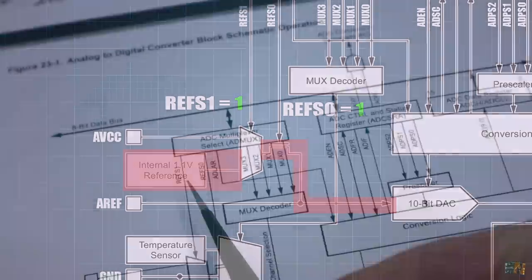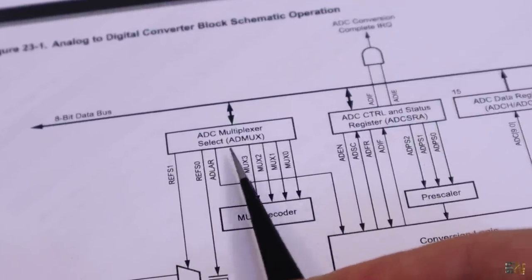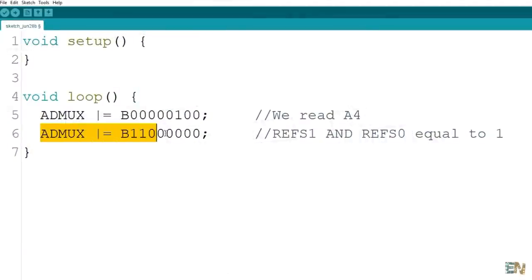These two bits are from the ADMAX register, bits 6 and 7. So in order to select the internal reference in the code, we make the ADMAX or equal to 11000000. So now those two bits are 1, 1.